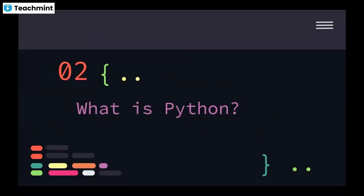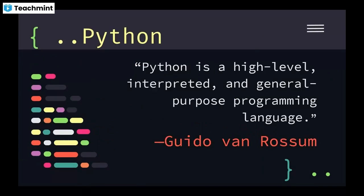Next: what is Python? Python is a high-level, interpreted, and general-purpose programming language. Being a high-level language means it is more readable and easier to write compared to low-level languages.